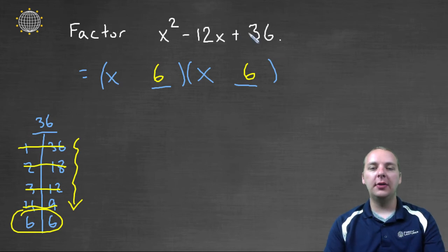So to get a positive 36 when we multiply, it would either have to be a plus and a plus, or a minus and a minus. Now if we had a plus and a plus, that could not add to -12x.